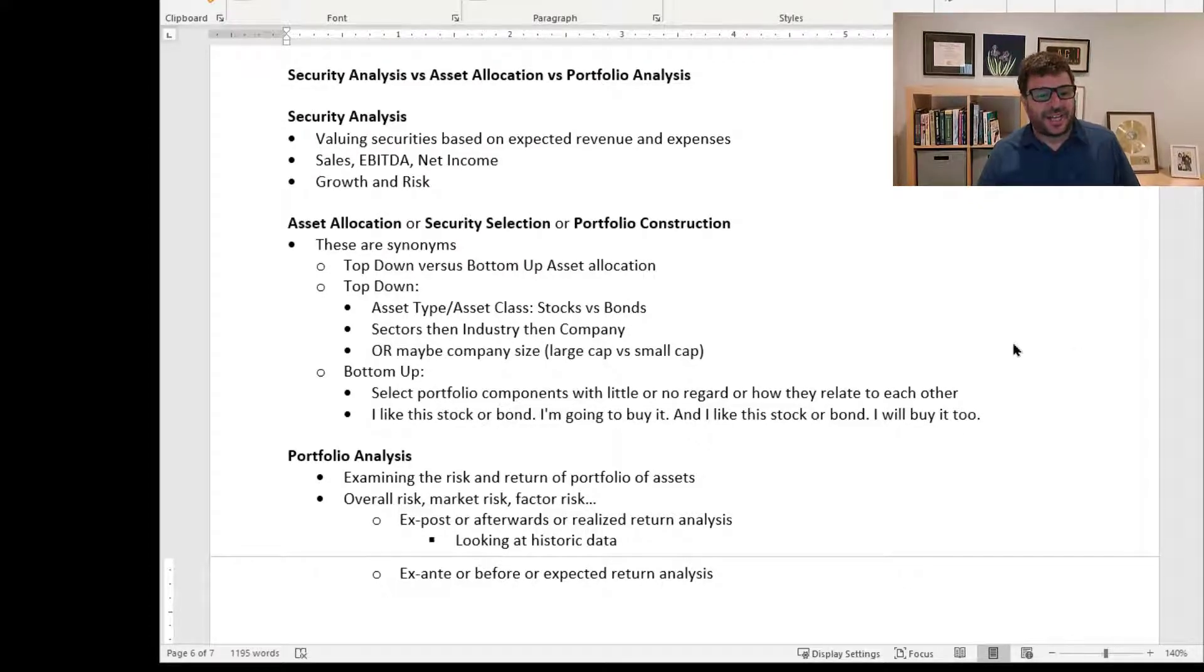The next is asset allocation, security selection, or portfolio construction—essentially synonyms. We'll break this into two kinds: top-down versus bottom-up. Top-down starts with very broad categories like stocks versus bonds, then moves to sectors, industries, and specific companies, or company size categories like large cap versus small cap. We make large allocations into big buckets, then allocate to smaller subsets before populating with actual securities.